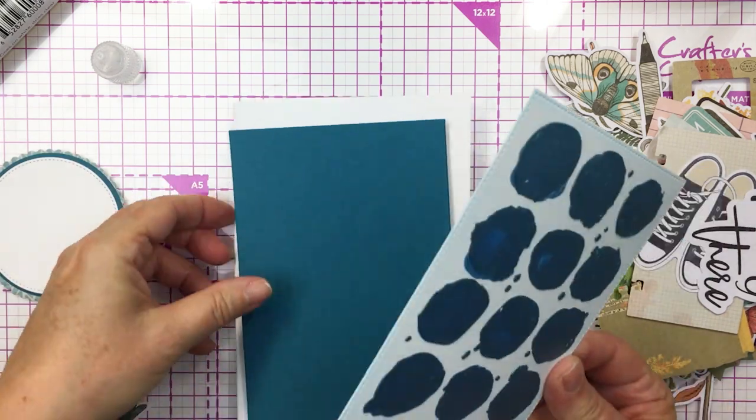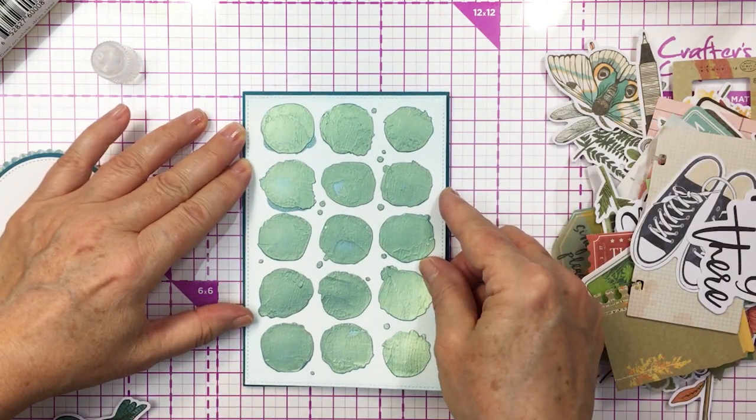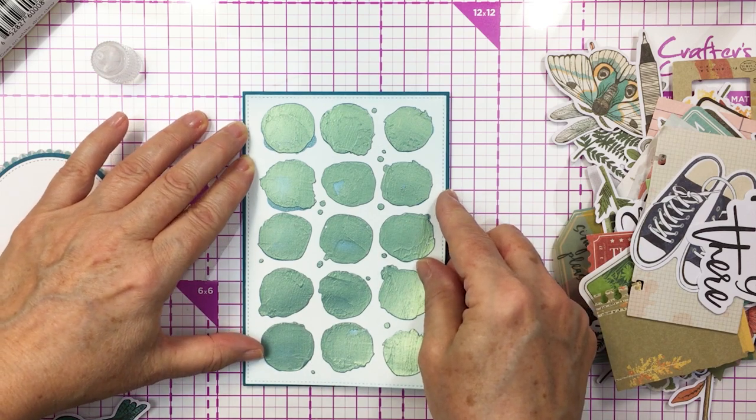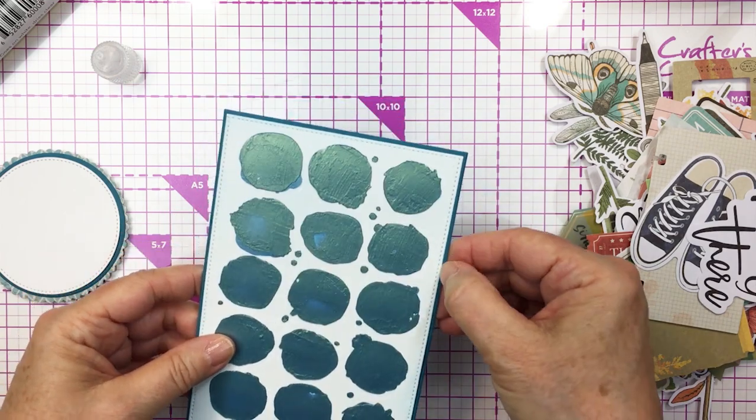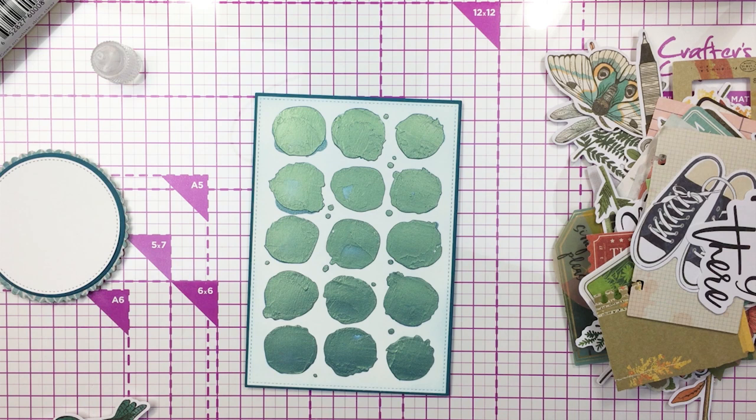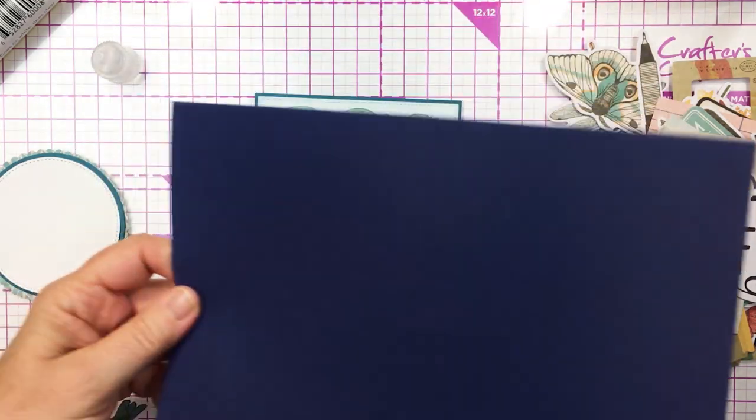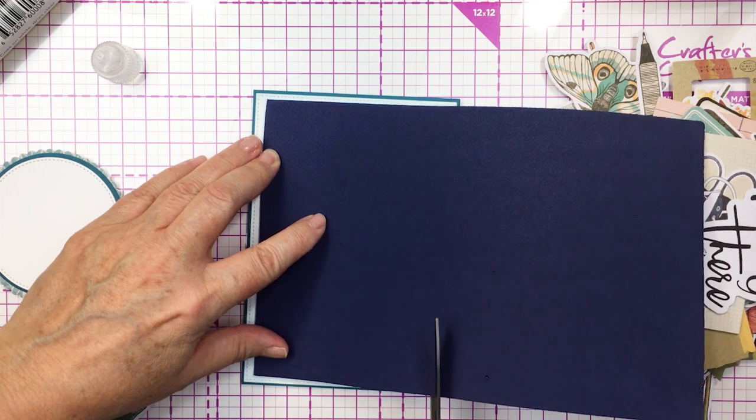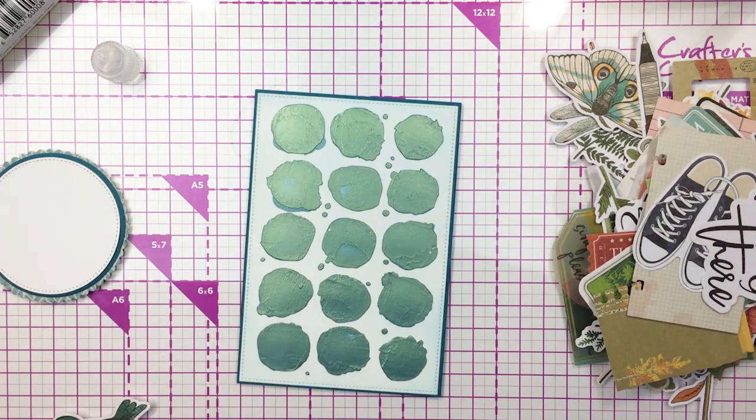I'm going to use a little bit of liquid adhesive to adhere this card front onto this mat and that liquid adhesive just allows me a little bit of time to wiggle the paper around and make sure that I get it in just the right spot. Now I'll take a little bit of craft foam from my stash. The nice thing about the craft foam is that it's not too thick, it's just kind of like a little layer of thickness on your card.